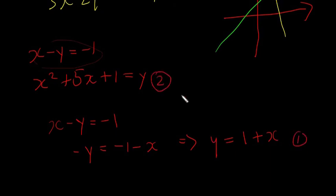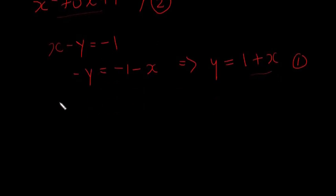Our equation 2 is going to be this one here. So if we substitute 1 into equation 2, if you see y = 1 + x and y is also equal to all of this, we can say that this is equal to this. So x² + 5x + 1 = 1 + x.